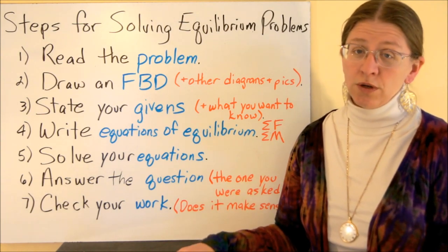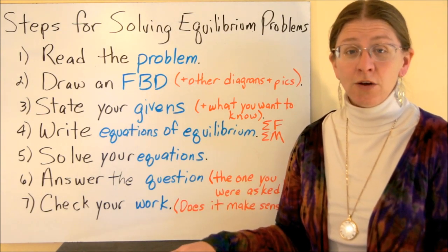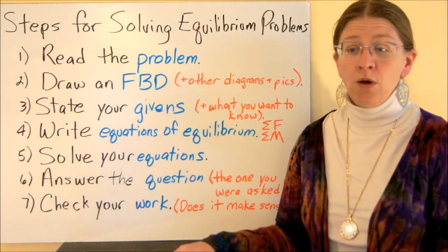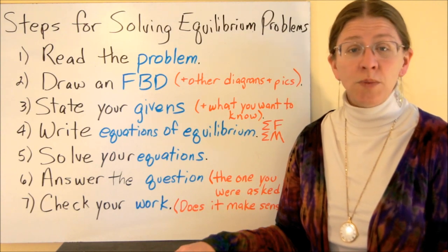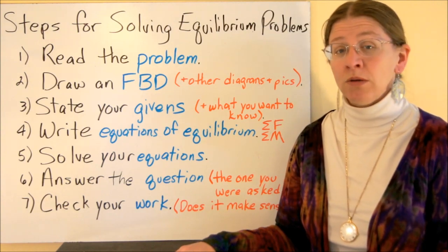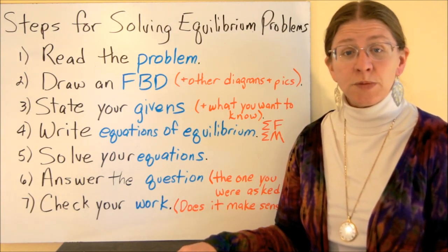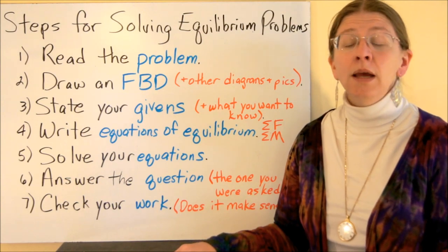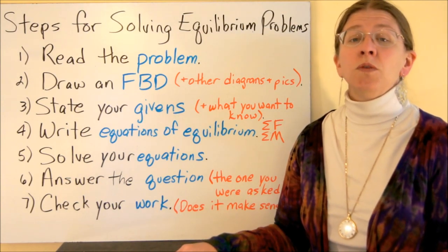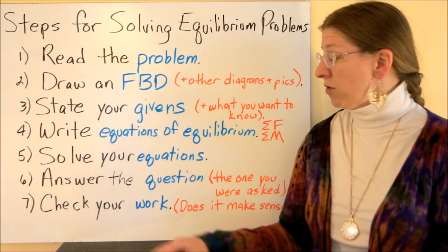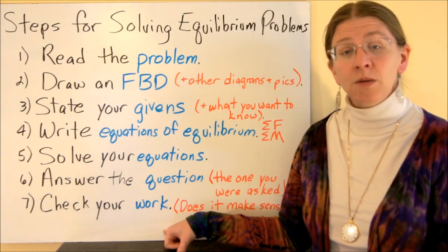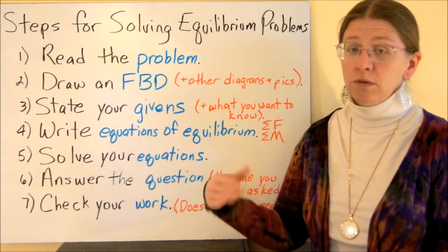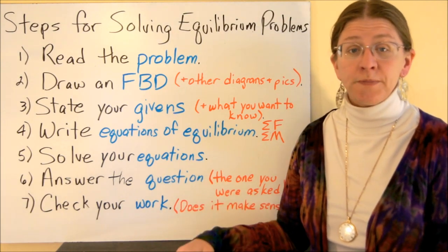Engineers — here's the old joke. If a pilot crashes a plane, he might kill 20 people. Or if a doctor makes a mistake, he might only kill one. But if an engineer makes a mistake, he can kill 100 or 200 at a time. It's very important that you get used to checking your work, even at the beginning of an engineering career, so that you aren't that person.